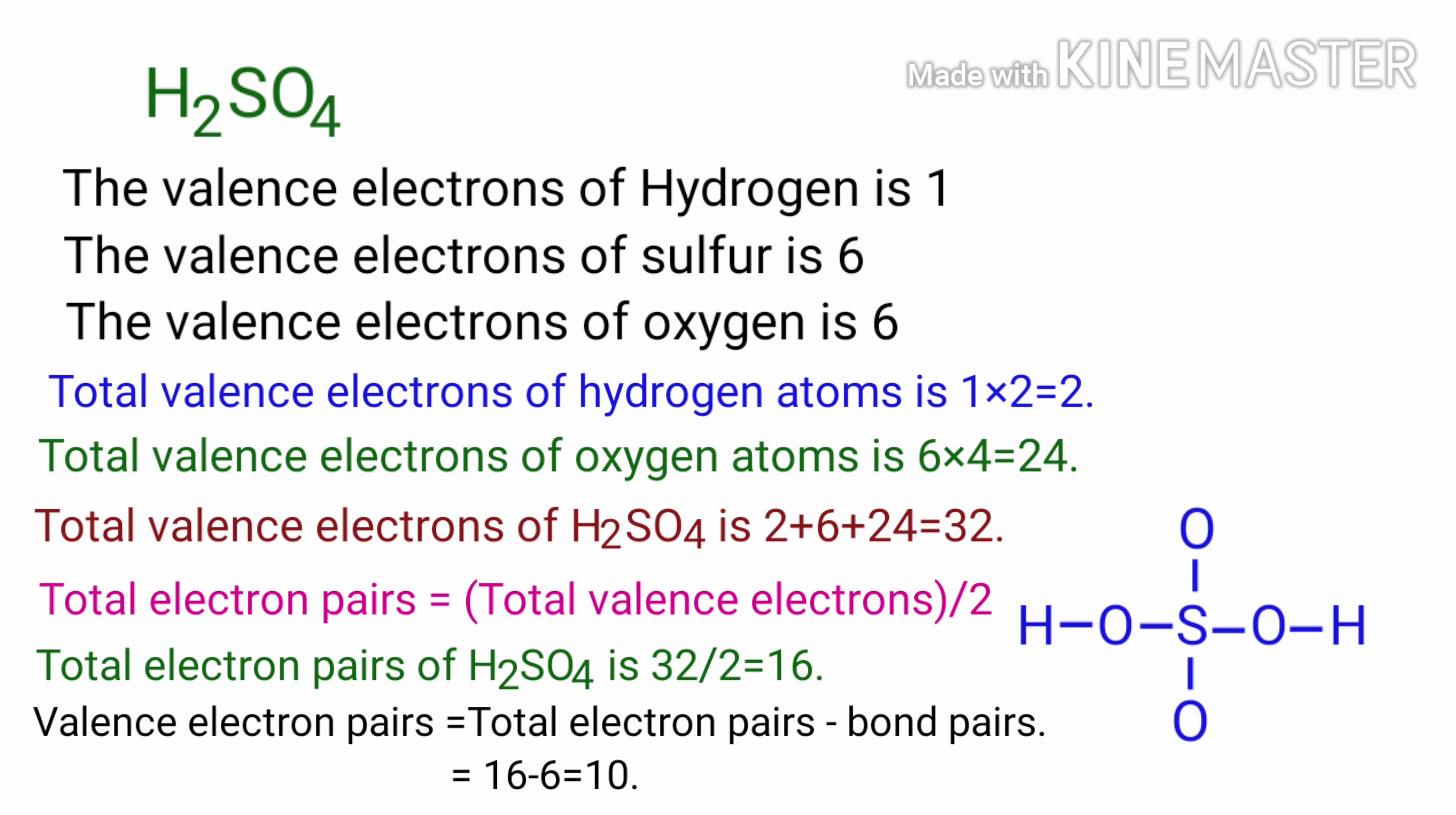First mark those 10 electron pairs as lone pairs in outside atoms. The hydrogen atom cannot keep more than two electrons in its outer shell. There are already two electrons in hydrogen atoms. Therefore, we cannot mark those electron pairs on hydrogen atoms. We can mark those 10 electron pairs on oxygen atoms. Oxygen atom can keep 8 electrons in its valence shell. Therefore, there is no electron pairs to mark on sulfur atom.